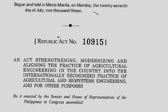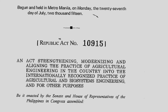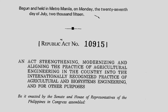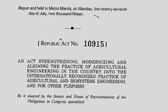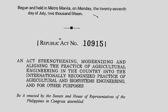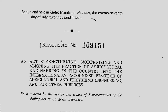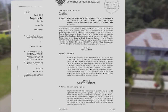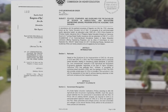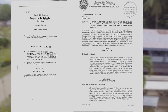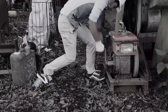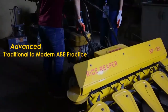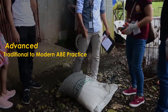On June 2005, organizing and aligning the practice of Agricultural Engineering in the country into the internationally recognized practice of Agricultural and Biosystems Engineering was passed into law, and when CMO No. 94 Series of 2017 was strictly implemented, the program has been continuously advanced from traditional to the modern practice of Agricultural and Biosystems Engineering.